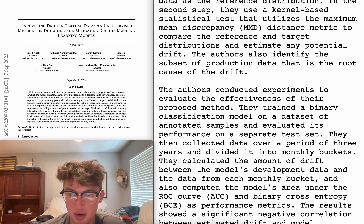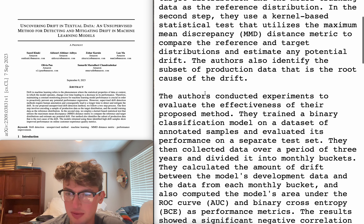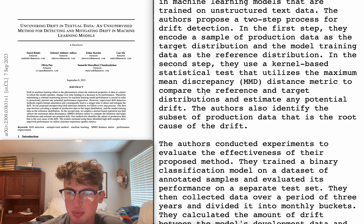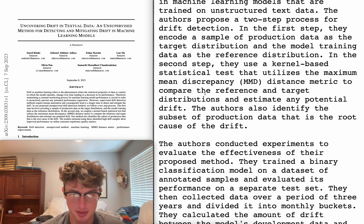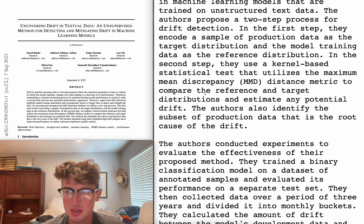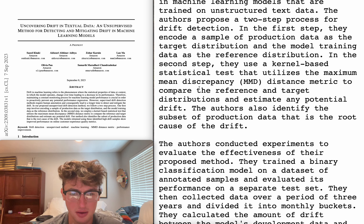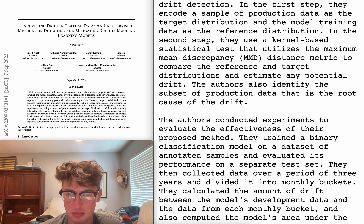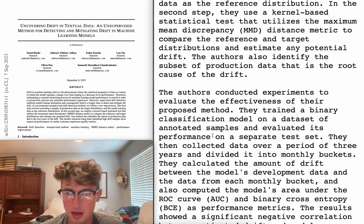They also identify the subset of production data that is the root cause of drift. So training versus production data. I mean, this is a production use case, like if you're a business-y Amazon, right? How is the training data different to using artificial training data? What's the deal with training data versus the production data here? Like, is production data their test data, or is it just newer? Is it not the same source distribution as the training data? I'm confused.